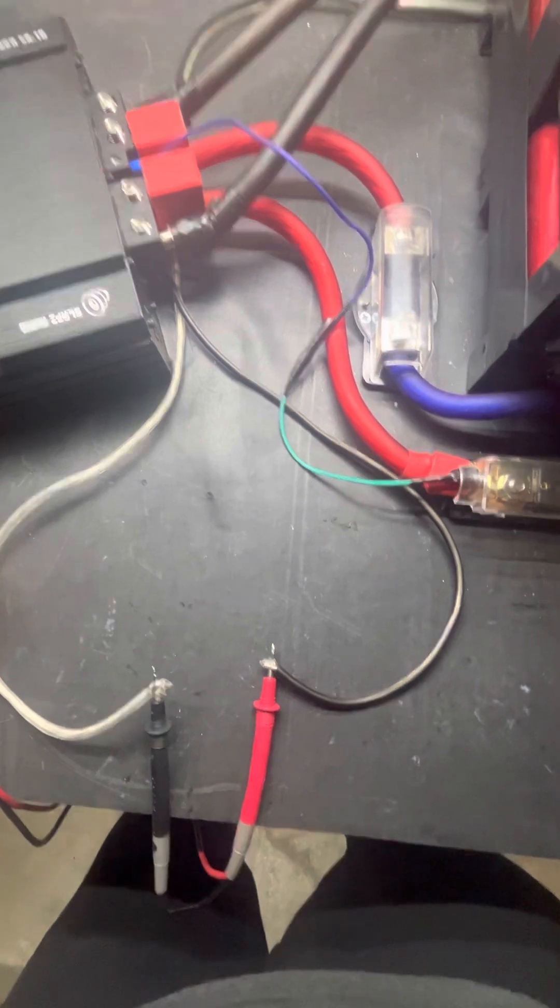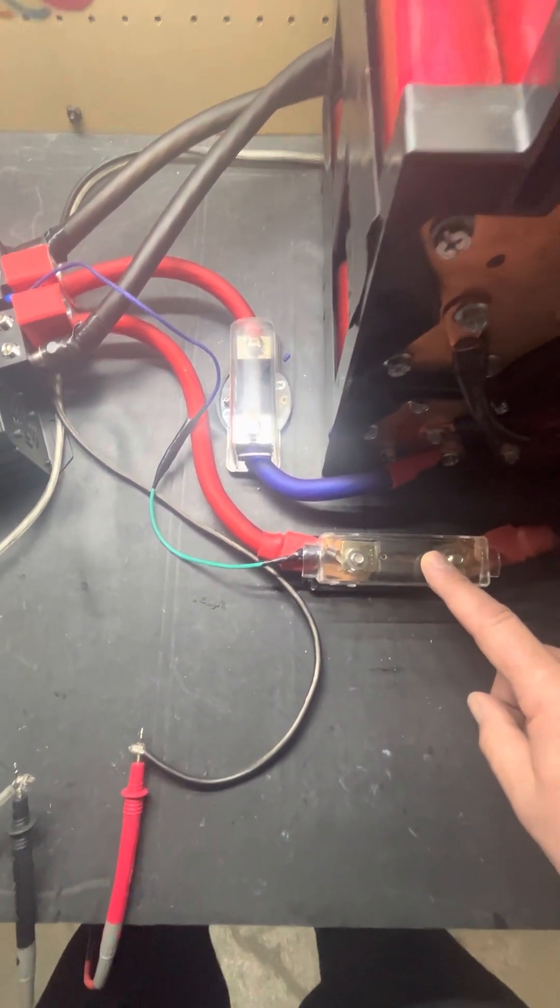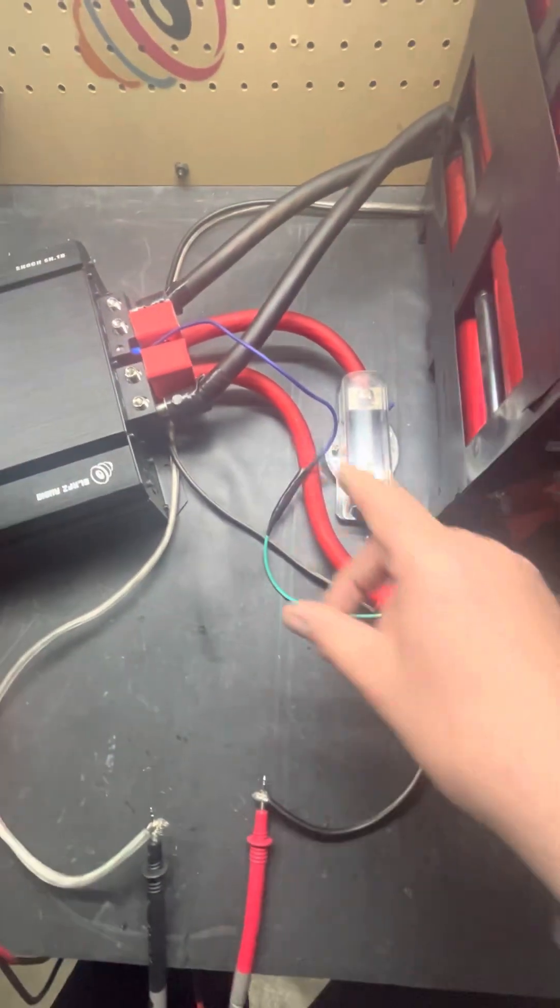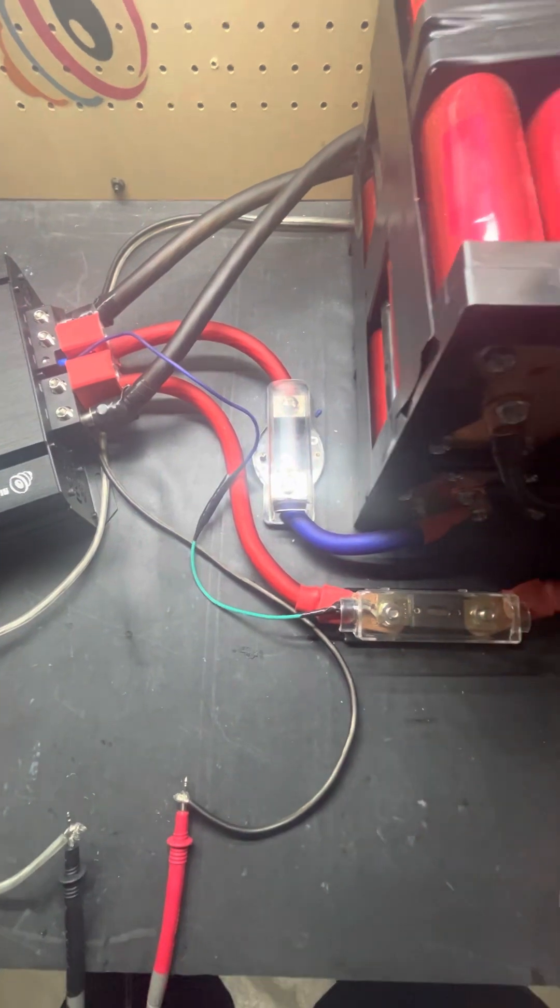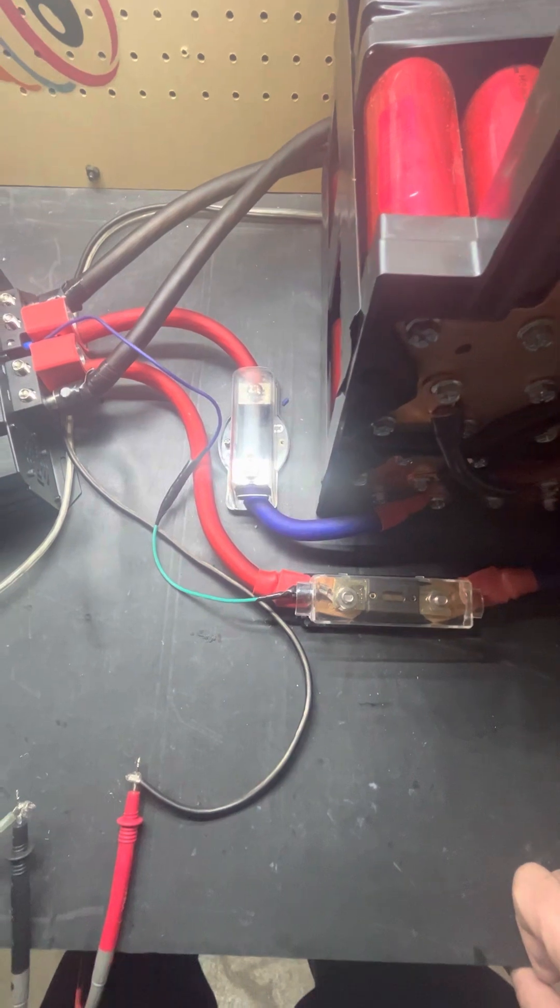When you're doing dual runs for the 5k, you would want to fuse depending on your voltage, but we want to see 200 to 250 amps per run for the 5k, and for the 8k anywhere from 300 to 350 depending on your voltage.